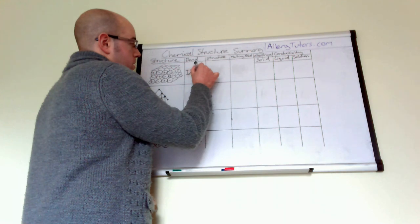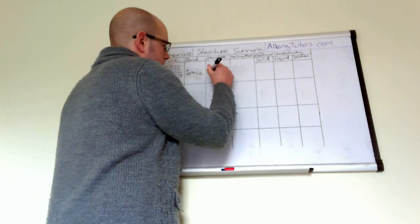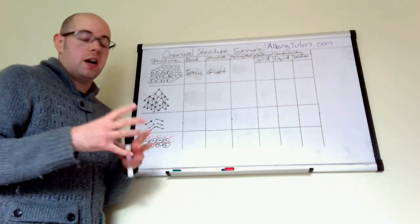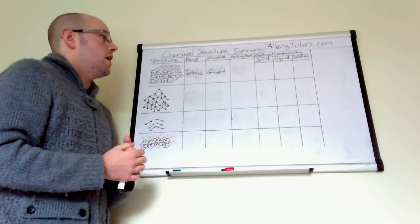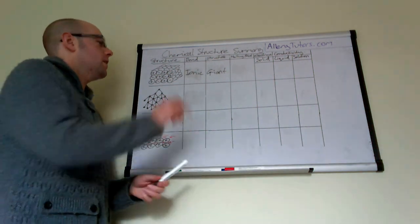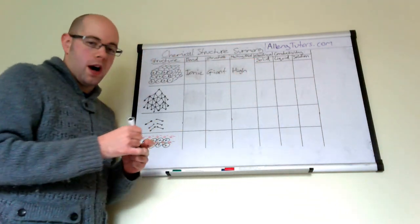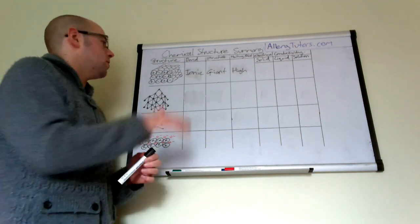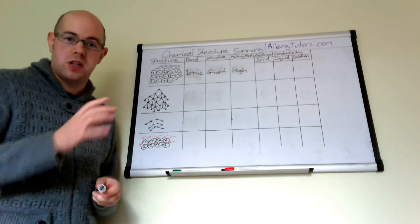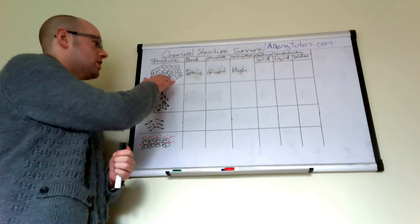We have positive and negative ions in there, and the structure is giant — all of the ions are arranged in one large lump, which is why it's called a giant ionic compound. Melting points of these are quite high, and if asked in the exam why, you need to say that you have lots of strong electrostatic attractions between oppositely charged ions, and you need a lot of energy to overcome these strong electrostatic attractions.